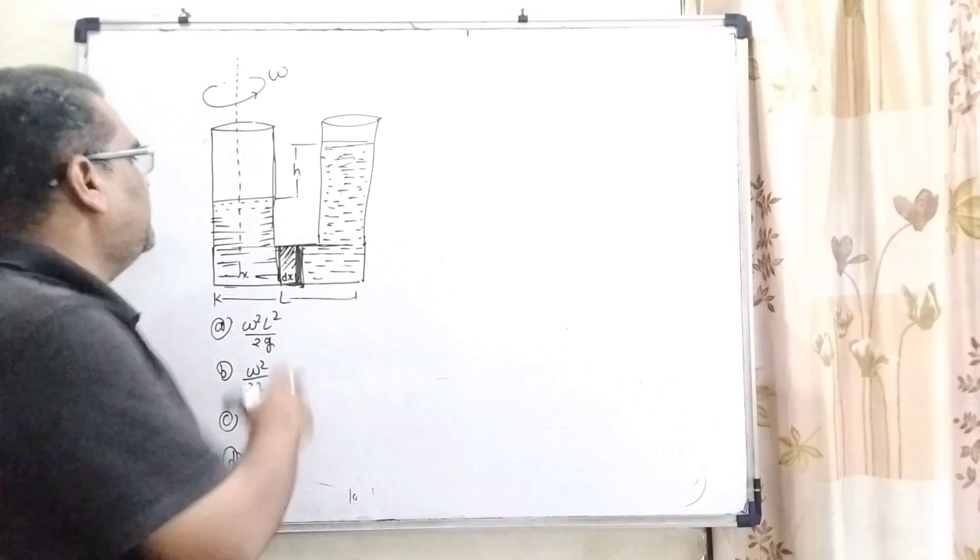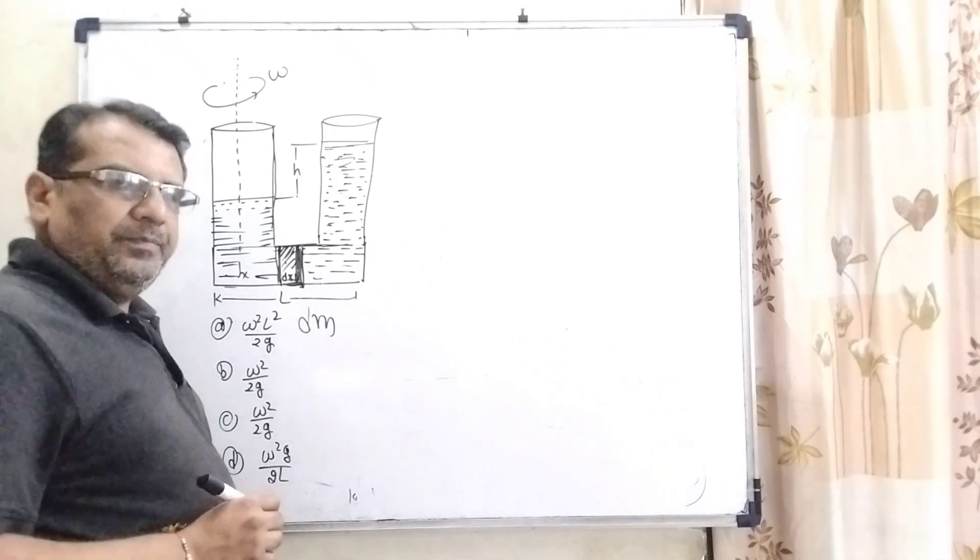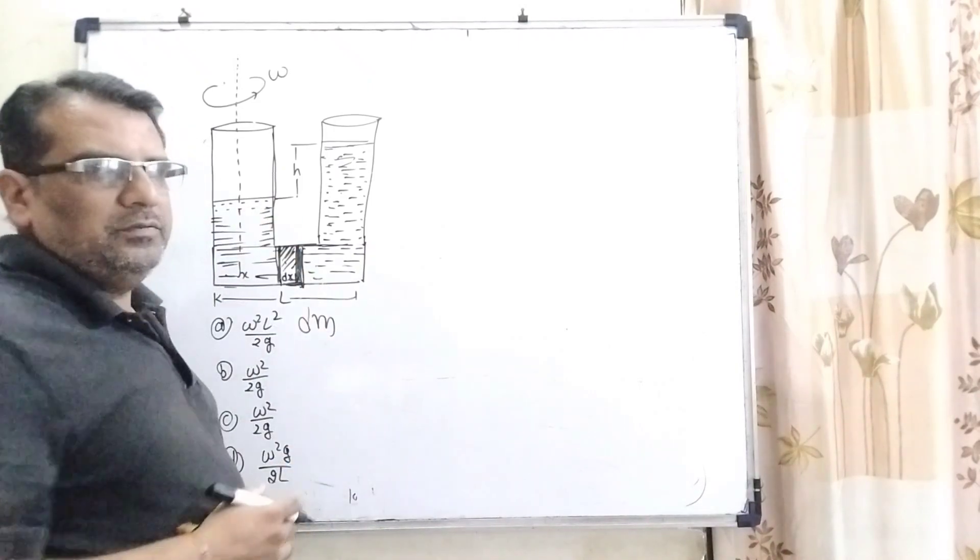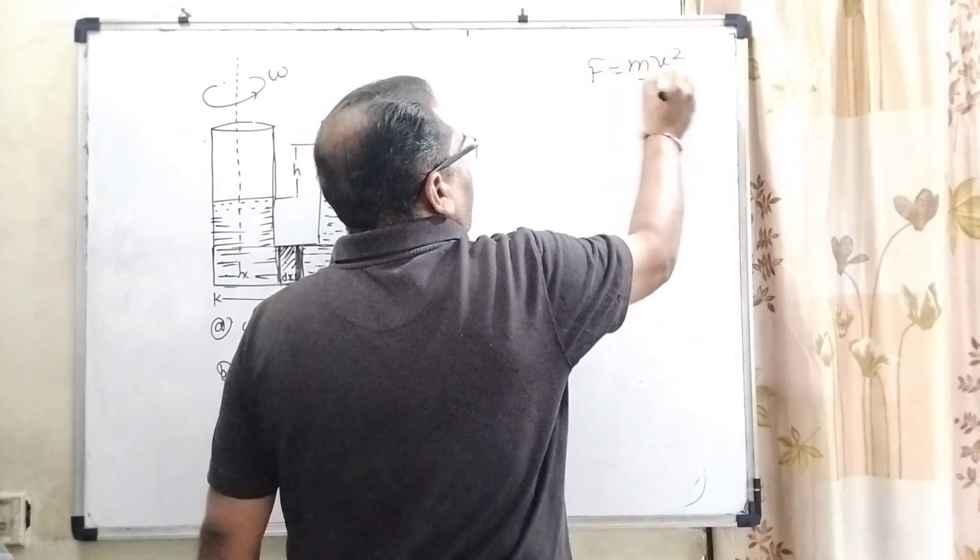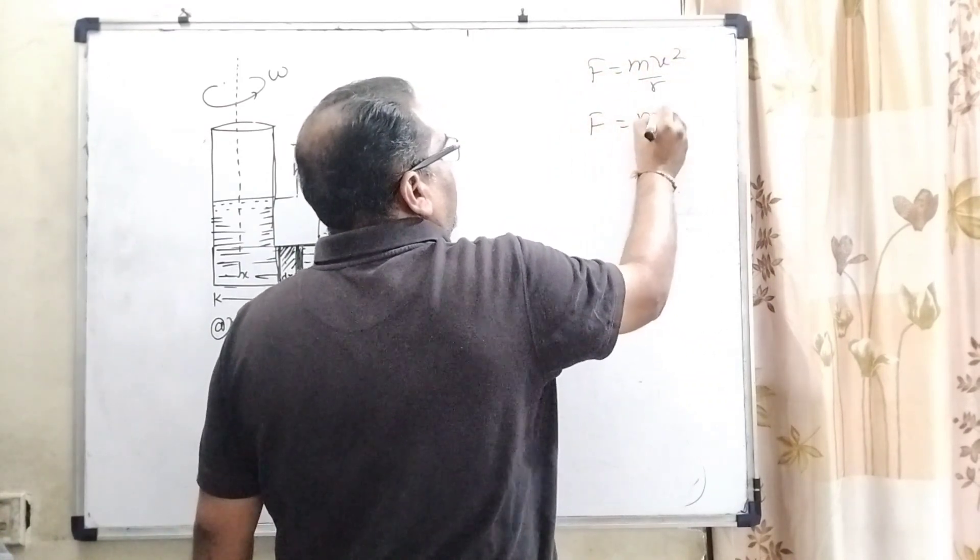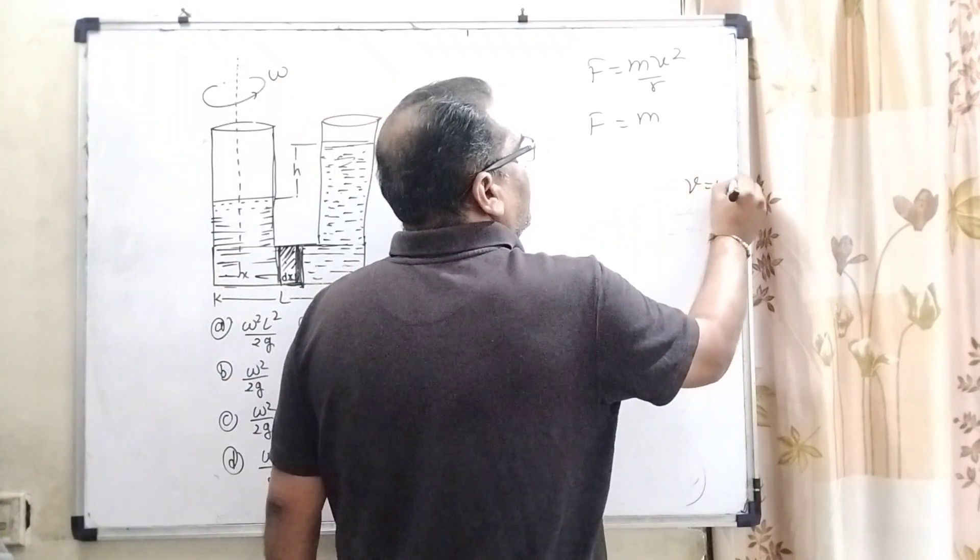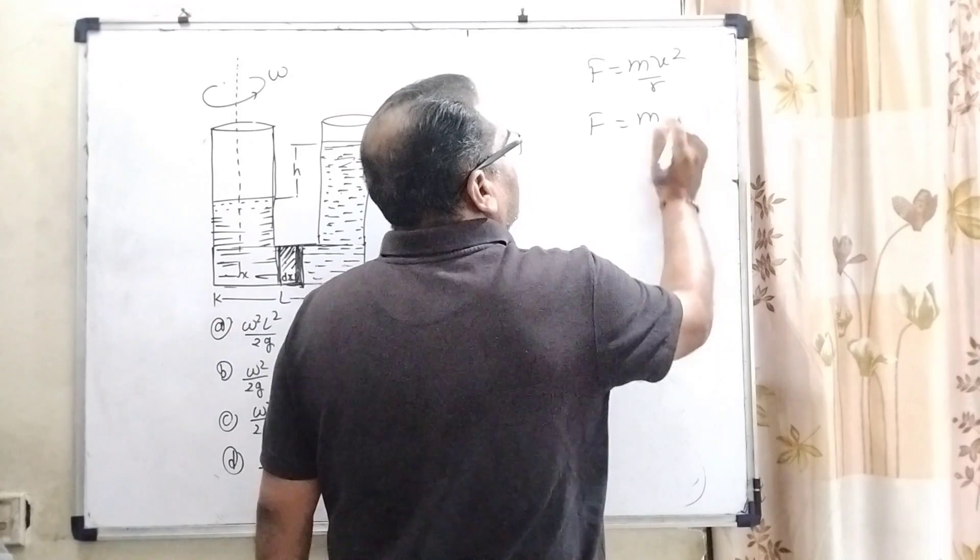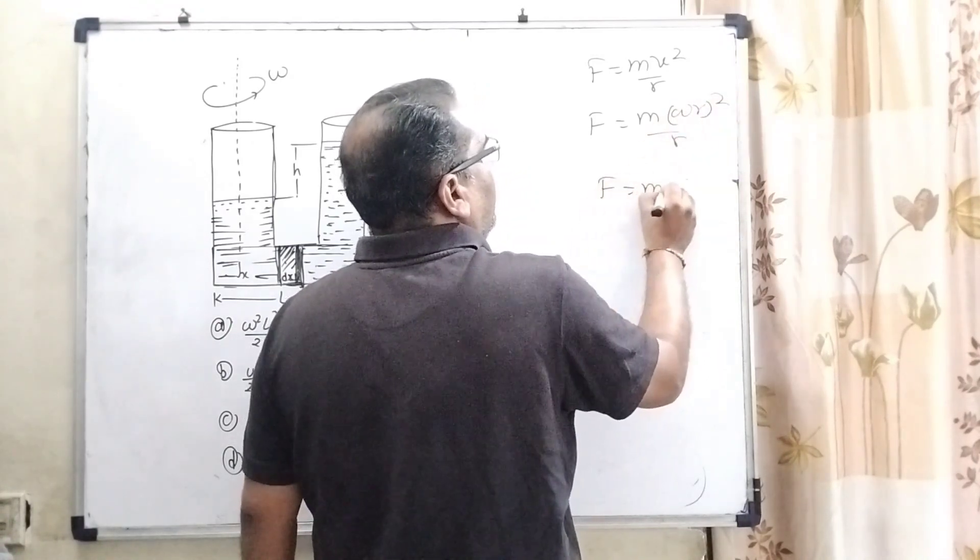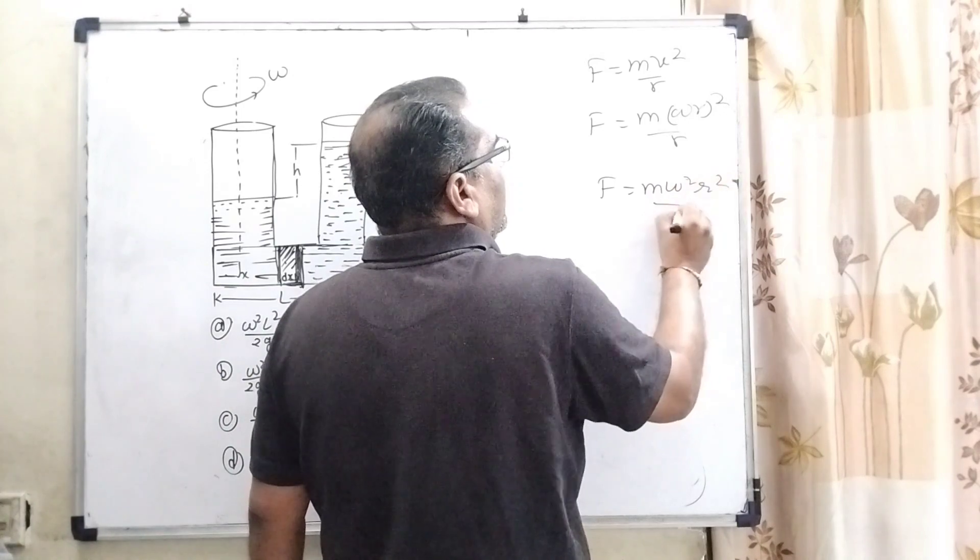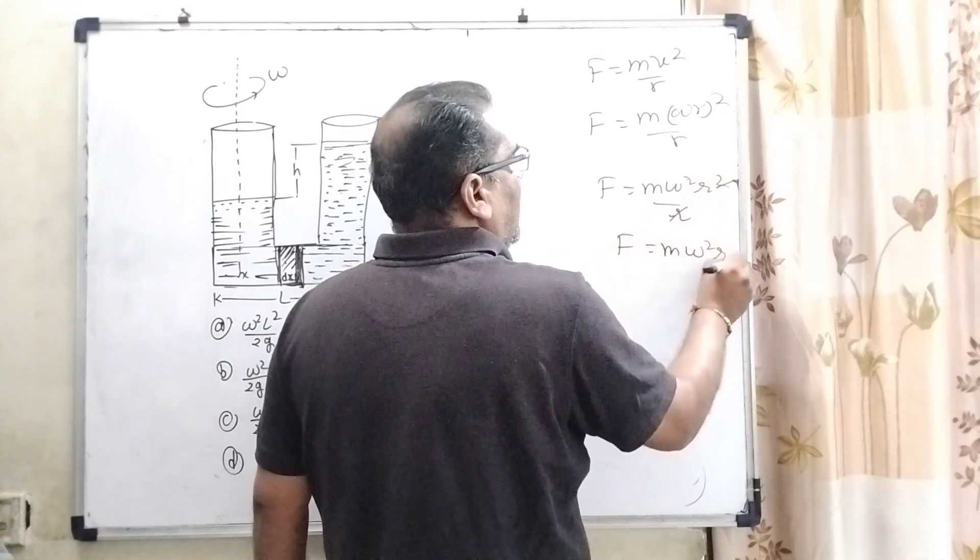Now, first of all, we have considered a mass element dm with width dx and applied centripetal force. What is centripetal force? F equals M omega square R. Then M, V - linear velocity and angular velocity, what is the relation? V equals omega R. So substituting this value, omega R square upon R, then F equals M omega square R square upon R. R cancels, so F equals M omega square R.